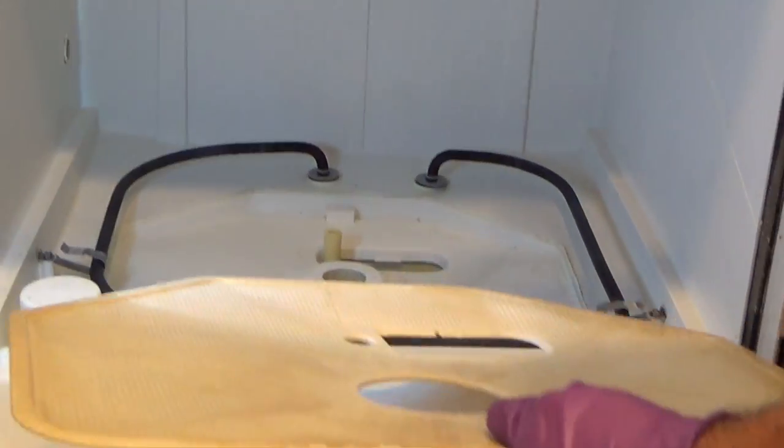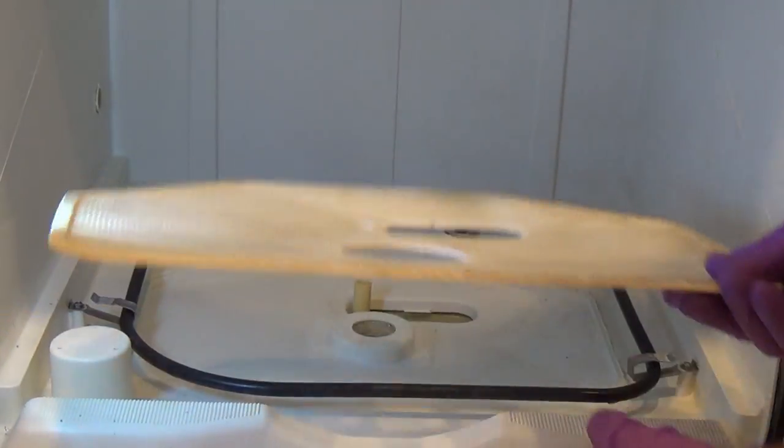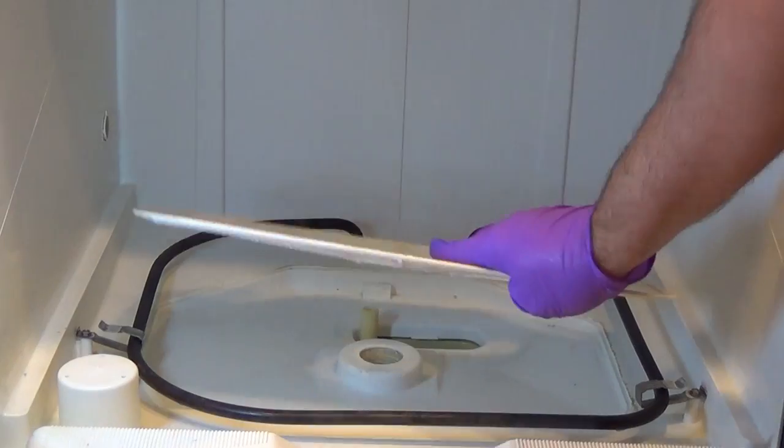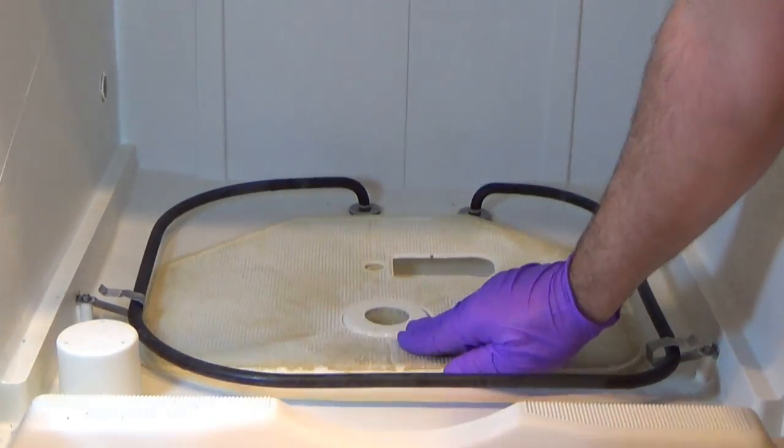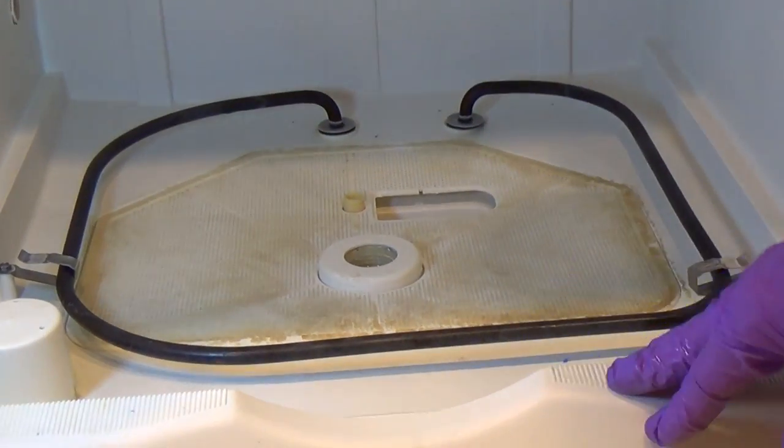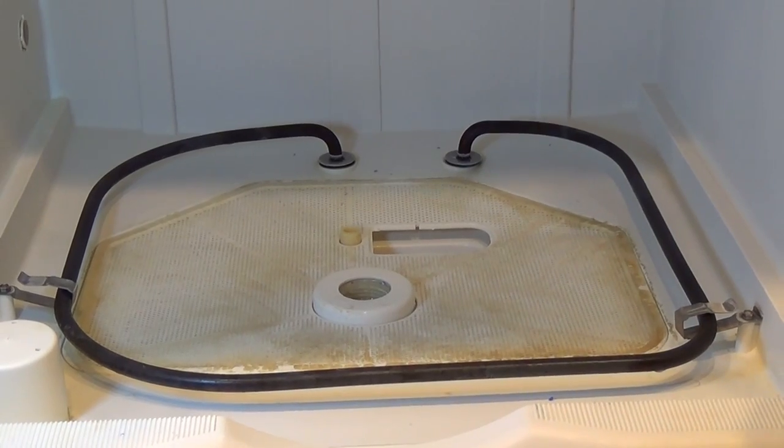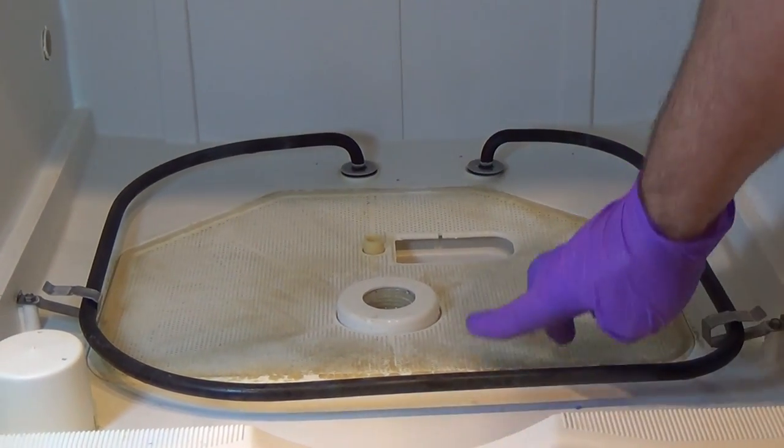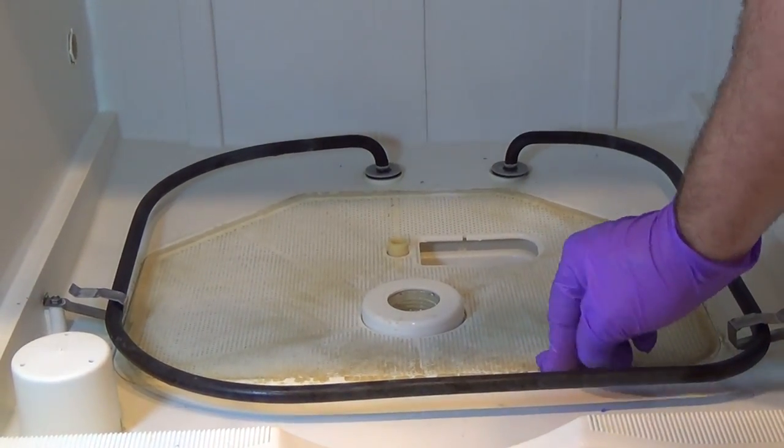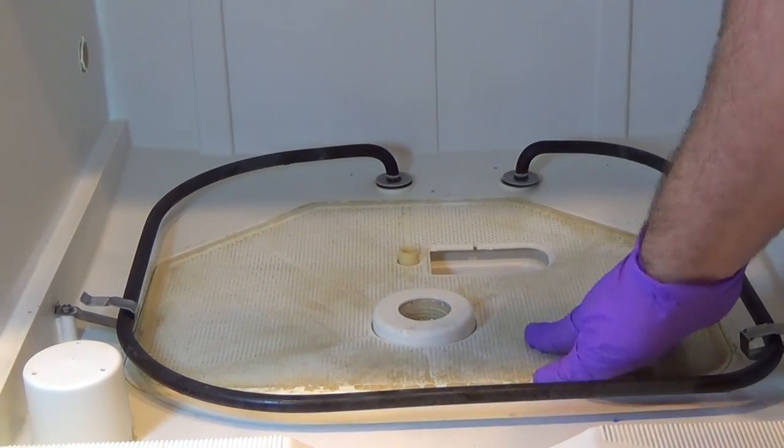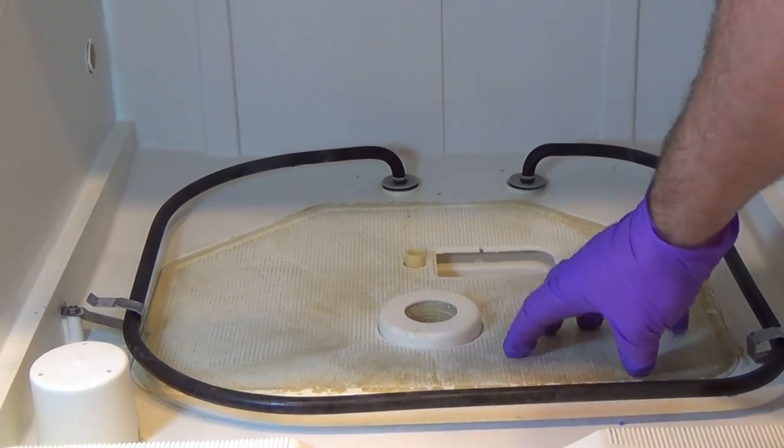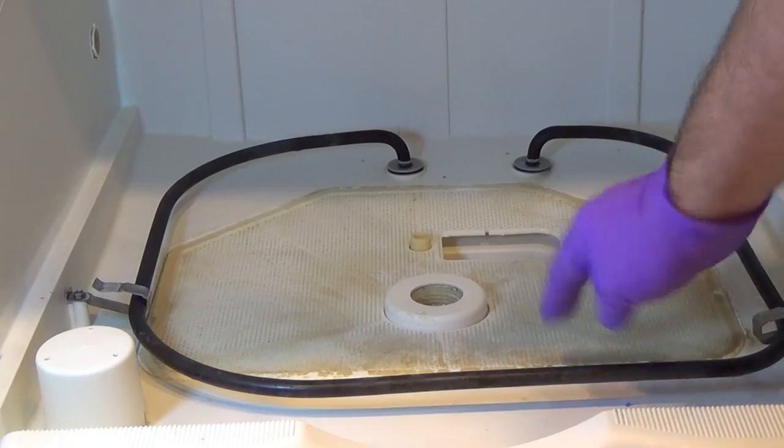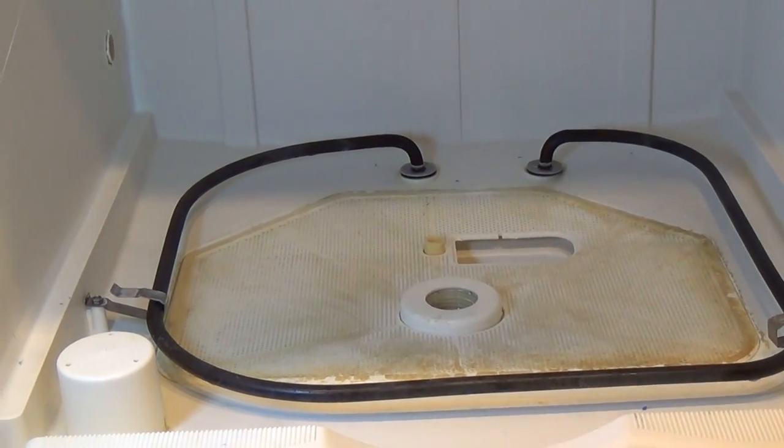Now that we've finished cleaning the inside and all the outside pieces, we can start putting it back together again. Let me start by putting the filter. Maybe if you soak it in the oven, it will come off. Possibly. Or soak it in vinegar for longer. All the holes are clear, but this is just a stain on the top. So function-wise, it's fine.